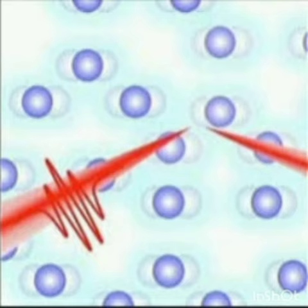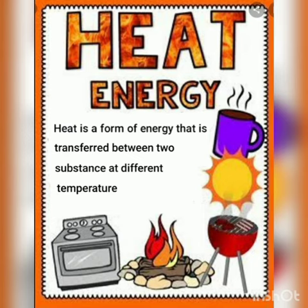Thus, heat energy is transferred from one part of the substance to other parts of the substance. Thus, heat energy can be defined as a form of energy that is transferred between two substances at different temperatures.